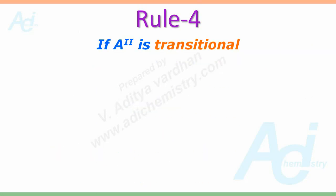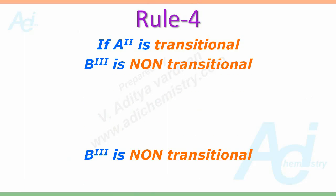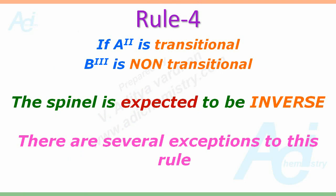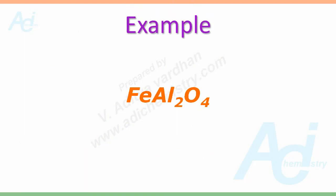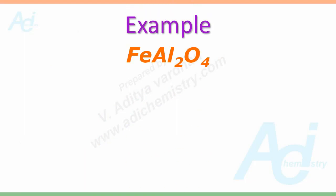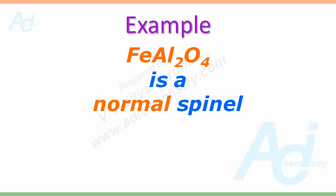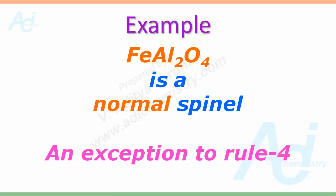Rule number 4: if A2+ is transitional and B3+ is non-transitional, the spinel is expected to be inverse. But there are several exceptions to this particular rule. For example, FeAl2O4 — according to rule 4 — is expected to be an inverse spinel, but indeed it is a normal spinel, making it an exception to rule 4.